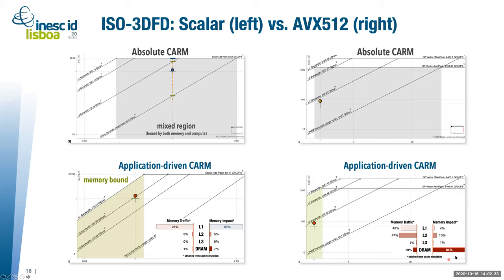We got higher performance, but now we are L3 bound. In the absolute CARM, we can still see a shift — still in the mixed region but moving slightly toward memory bound. This shows how the two models give different and complementary insights into application behavior.